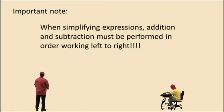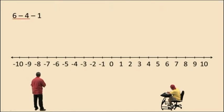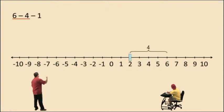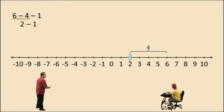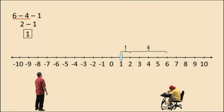So let's start with this problem here. Notice we have 6 subtract 4 subtract 1. Here we're going to perform the first subtraction: 6 subtract 4 is 2. Now we're going to subtract 1, move one more to the left, and our result is positive 1.